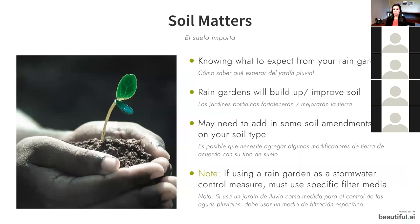Filter media is essentially your soil. If you are a municipality using this as a stormwater control measure, you must use a specific type of media. If you're installing at your HOA, residence, or smaller commercial building, you don't need a special media, but you do need to know what kind of soil you have. Rain gardens will build up and improve your soil, but before installation you may need to add soil amendments. There are resources on how to do infiltration tests and determine what amendments to use.